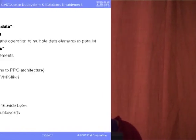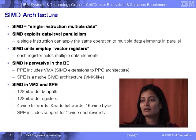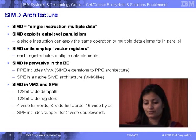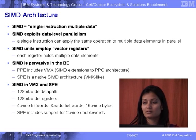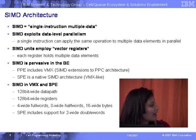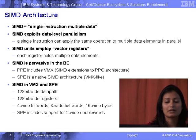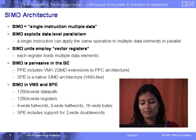The SIMD concept is fully exploited on the Cell processor. The SPUs are very well equipped with the power to do all kinds of vector operations. As we have seen, there are 128 registers — they're all vector registers — and they are 128 bits wide, so 16 bytes in length. You can store four wide full words (32 bits), half words — eight of them — or 16 wide bytes.